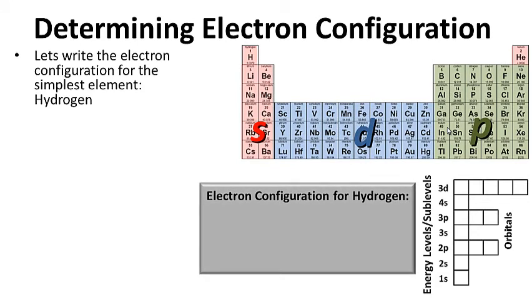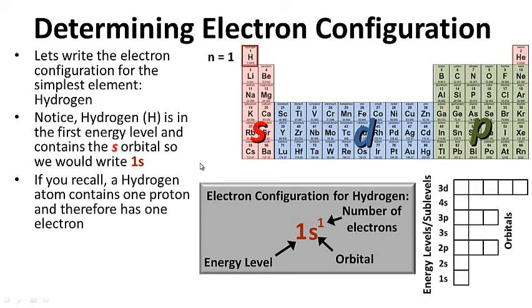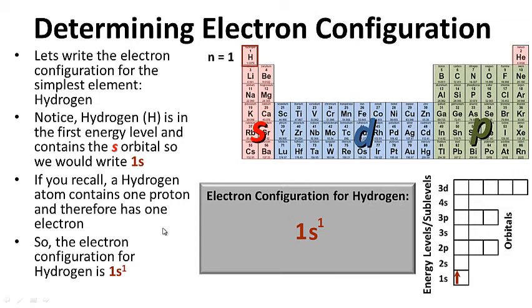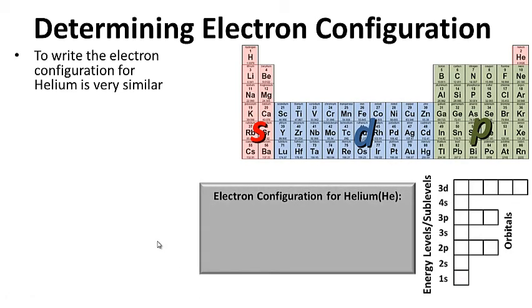Let's write the electron configuration for the simplest element, hydrogen. Hydrogen is in the first energy level and contains the S orbital, so we write 1s. A hydrogen atom contains one proton and therefore has one electron, so we write a superscript 1 to show the number of electrons. The electron configuration for hydrogen is 1s¹. We can write an up arrow to show that one electron — remember, an orbital can hold two electrons.